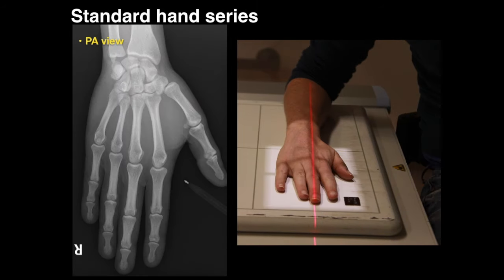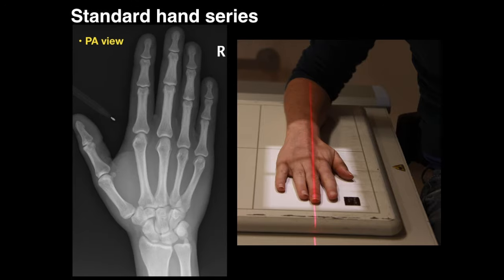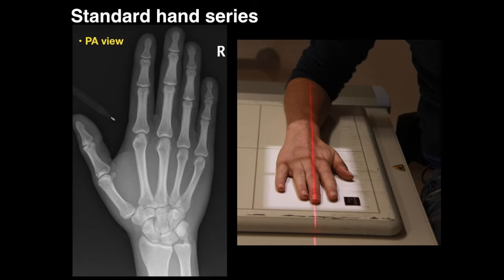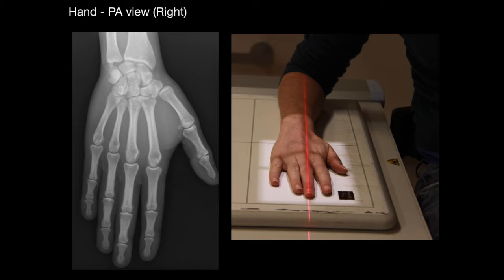The PA view is taken with the hand down, and we view the image as PA, oblique, and lateral. The PA view is good for demonstrating the carpals, metacarpals, phalanges, radius, and ulna in their anatomical position — really good for metacarpals. It's also good for evaluating whether a patient may have rheumatoid arthritis or osteoarthritis.